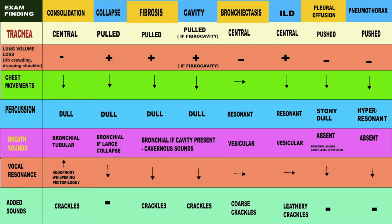Lung volume loss, as evidenced by rib crowding or drooping of the shoulder, is absent in consolidation. It is present in collapse, usually in a large collapse. It is present in fibrosis, present in a fibro-cavity, absent in bronchiectasis, present in interstitial lung disease, and absent in pleural effusion and pneumothorax.